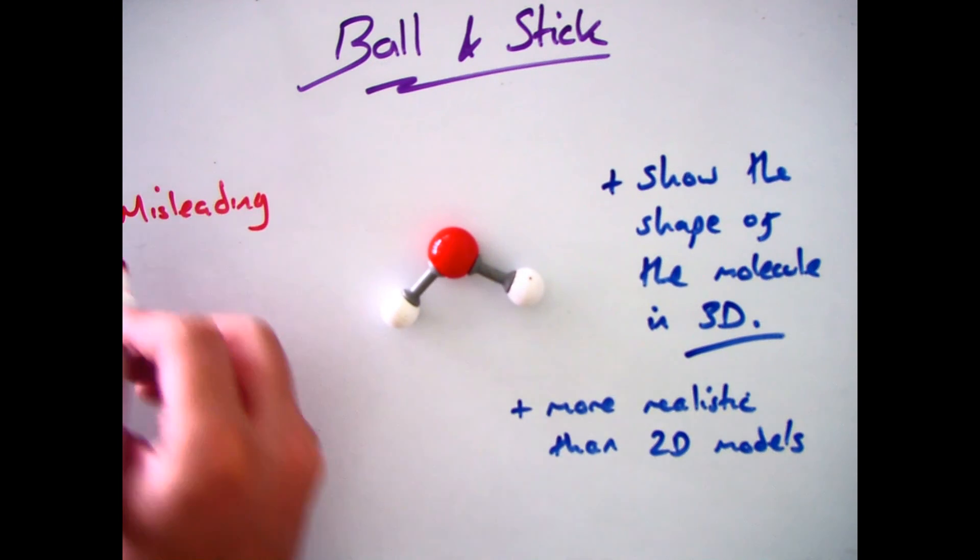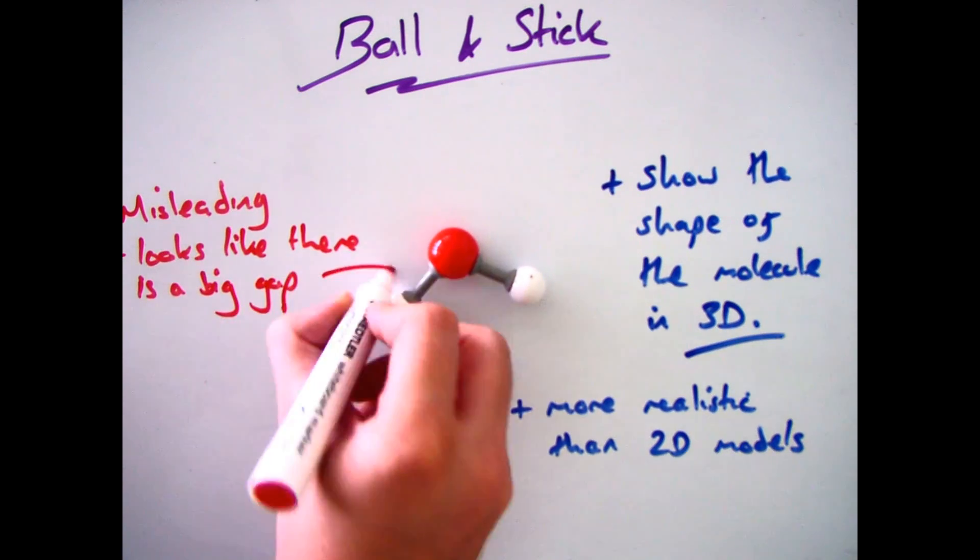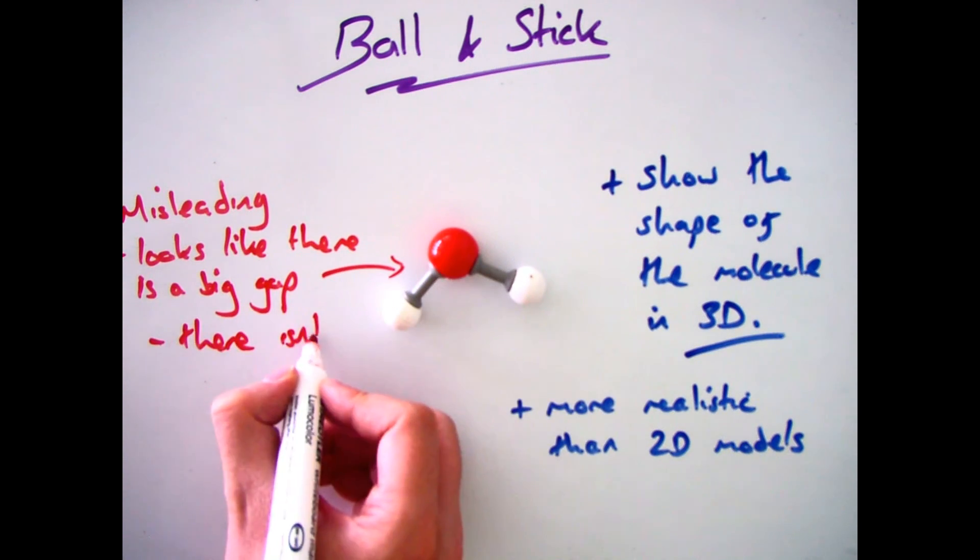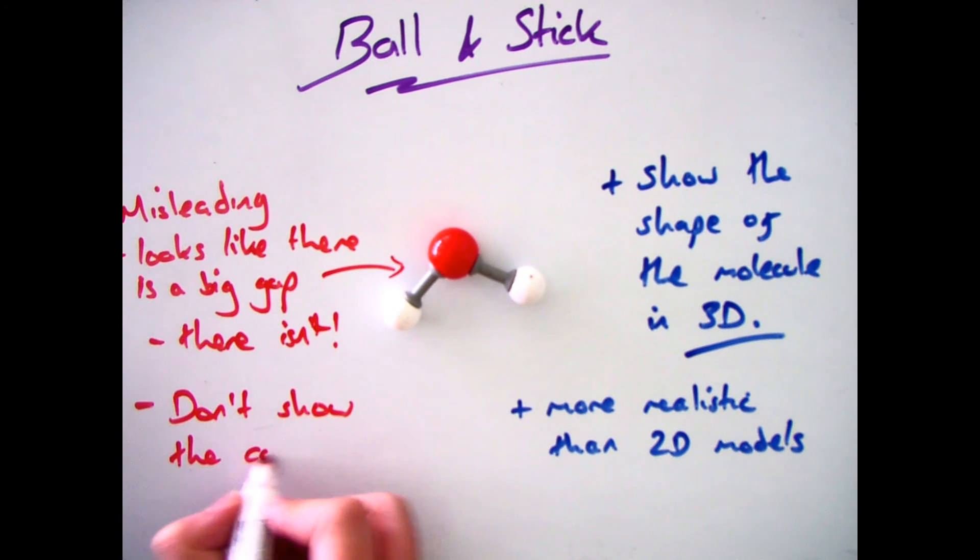It's for this reason that these are the more widely used out of all the different models we've talked about. However, there is a drawback to them and that is that they are misleading—it looks as though there's a large gap, which there isn't, between the actual atoms, and it also doesn't show you the correct scale.